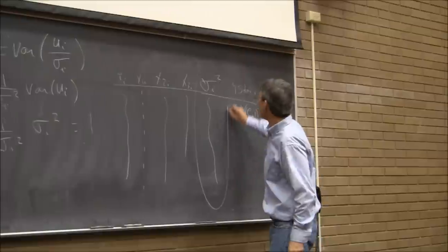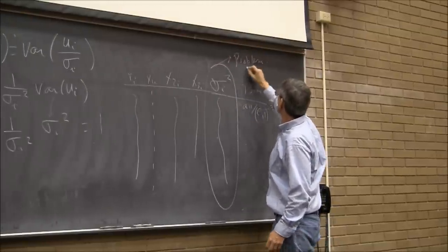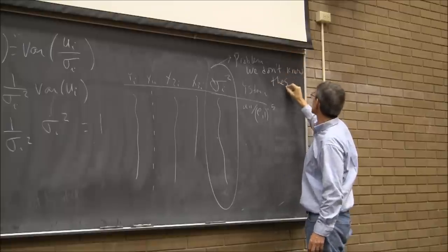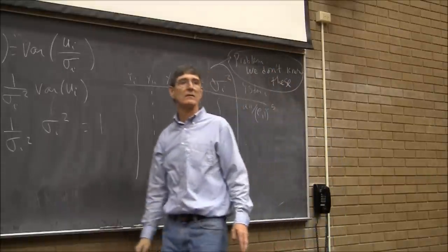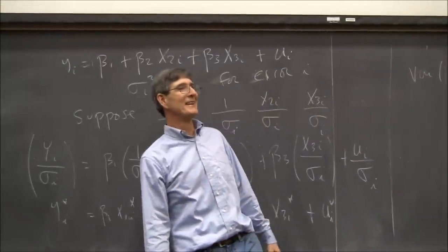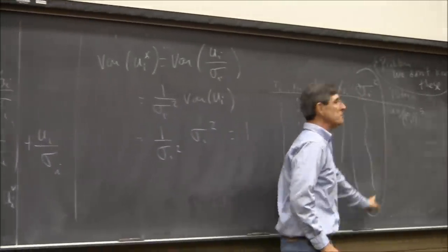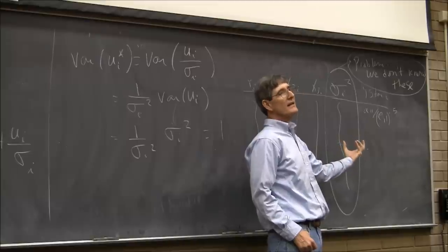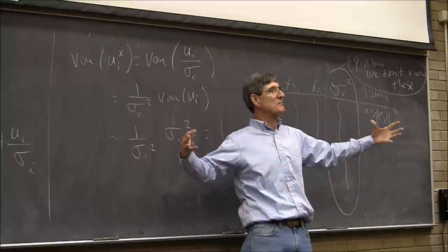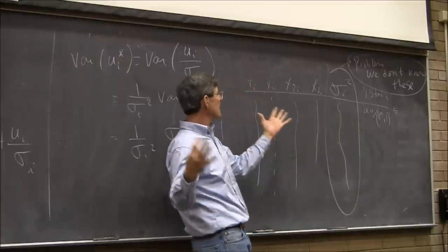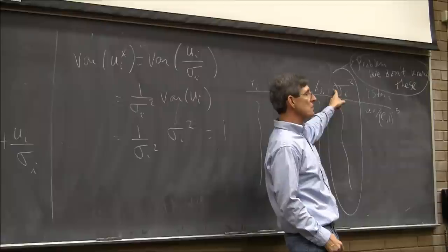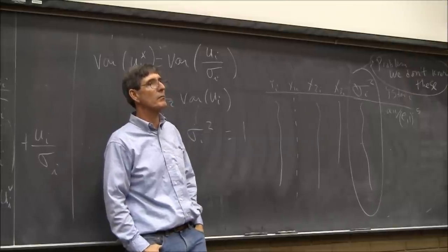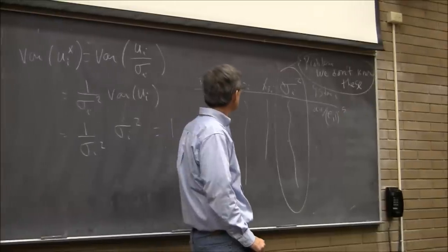The problem is we don't know these σᵢ values, except in very rare circumstances. We get an estimate of it — run the model once, get an estimate of σᵢ, put that in the spreadsheet, then use the estimate to correct. As long as the estimate is consistent and unbiased, at least in large samples, we'll get the same answer. When n gets big enough, that estimate will go to the true σᵢ², so for large n it shouldn't make much difference whether we're using the actual value or the estimate.